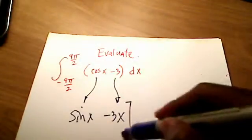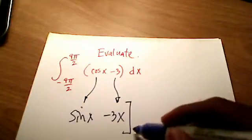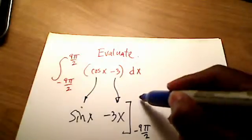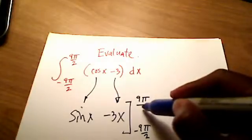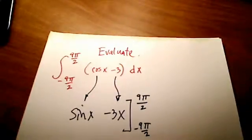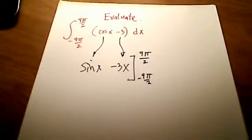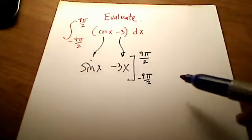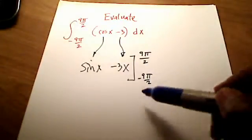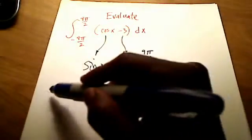All right, and we're going to evaluate this between negative 9π over 2 up to positive 9π over 2. And the fundamental theorem of calculus here, I'm just going to slide this down. Fundamental theorem of calculus says to rewrite this thing. So let me rewrite it this way.